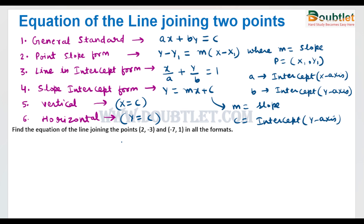Now we will see how we can find the equation of a line when the coordinates of two points are given, and we will try to obtain the line in each form. We have point A and point B, and we have to find the equation of the line passing through them.